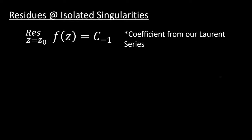So, residues are a little bit confusing. What is a residue? Well, a residue is just something that we attribute to an isolated singularity. We're only going to deal with isolated singularities for the time being. The isolated singularity of a function has this quantity, or this value, called a residue. The residue of our function at the singularity, which is z0, is equal to the negative 1 coefficient of our Laurent series.